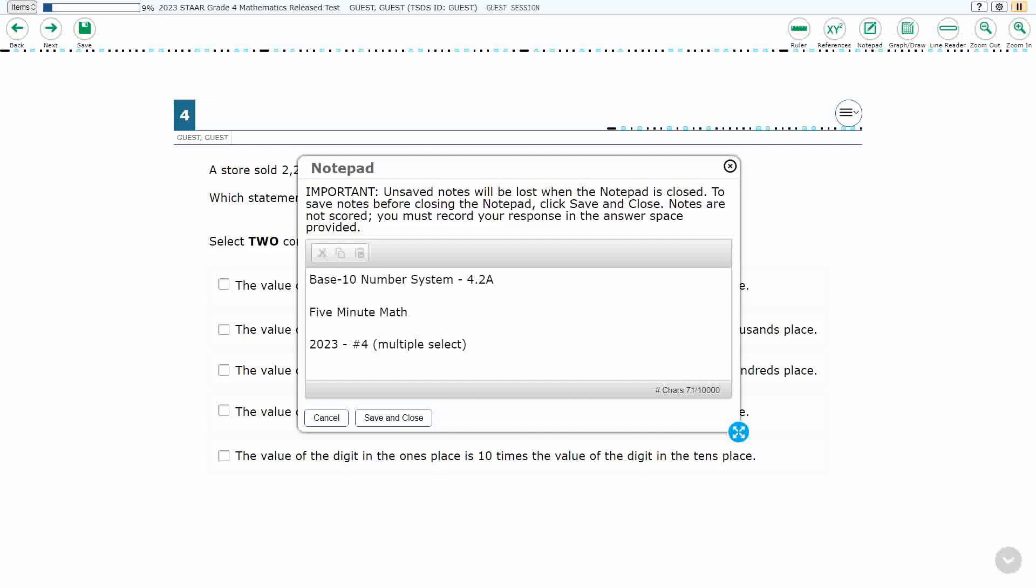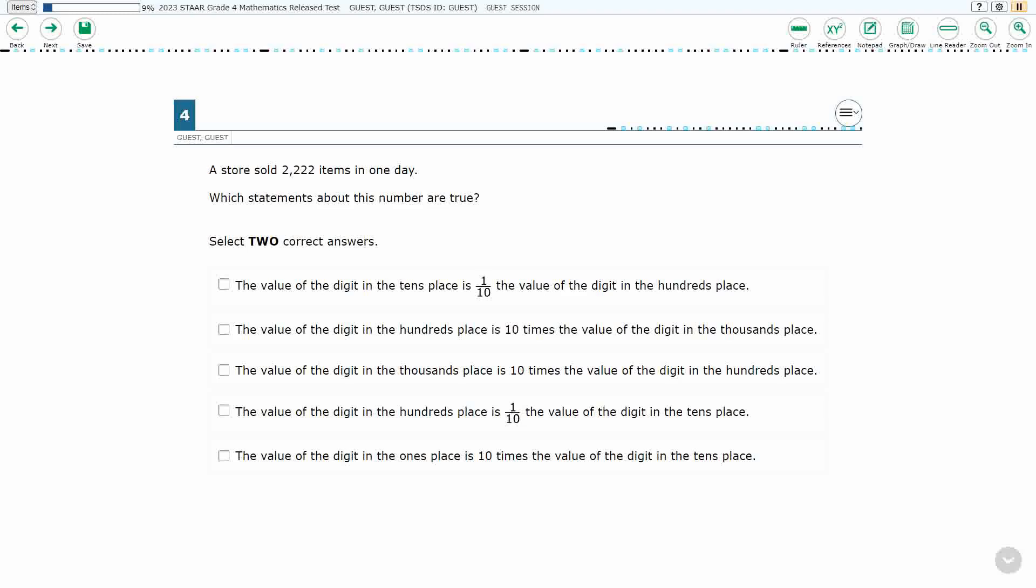Hello and welcome to 5-Minute Math. Today we are looking at the fourth grade concept of Base 10 Number System. This is standard 4.2a in the great state of Texas. We are using item number four, which is a new item type called Multiple Select, of the 2023 released STAR Test.